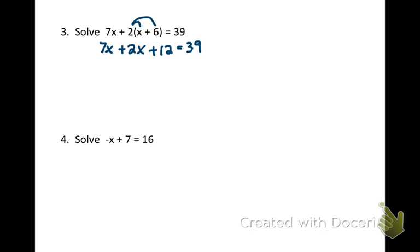Okay, my like terms on the left side that I can combine are the 7x and the 2x. That makes 9x, and now it's just a two-step equation. Subtract the 12 over, and divide by 9.